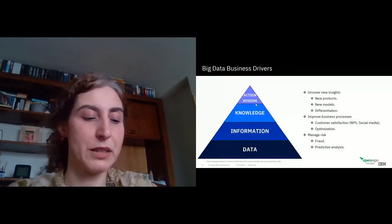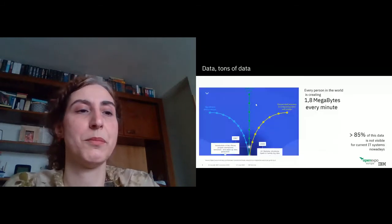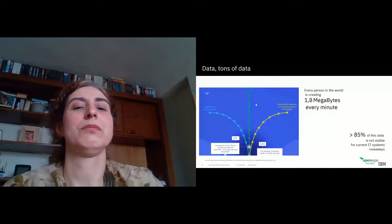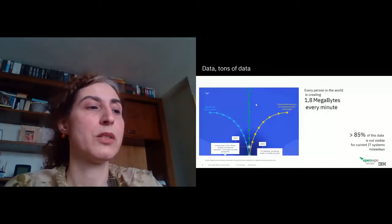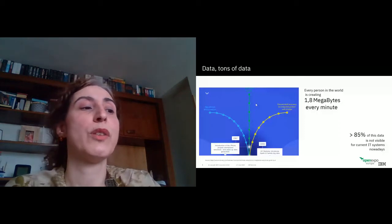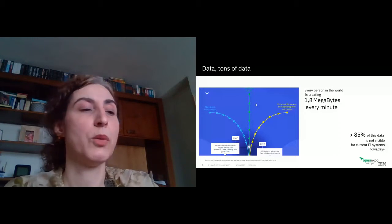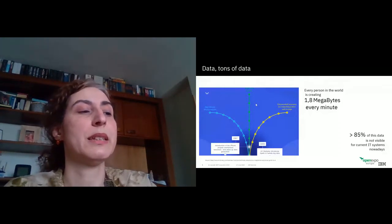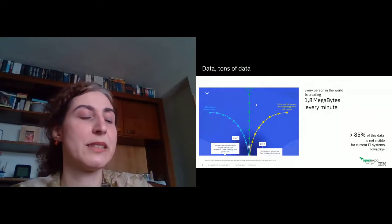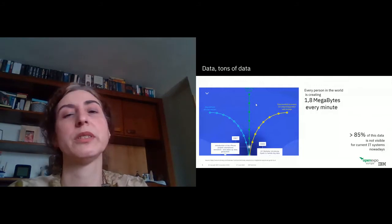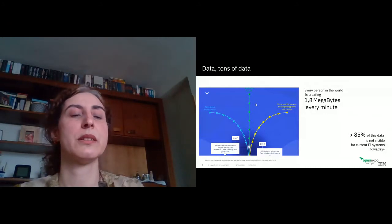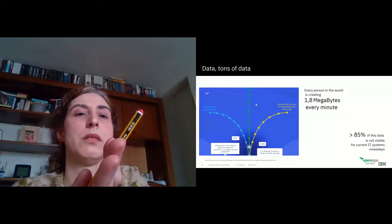So far we've talked about data, but this session is about big data — we are going to talk about tons of data. To be honest, even now there is no formal definition for big data. We can use the Wikipedia definition, where big data is defined as: a term for data sets so large or complex that traditional data processing applications are inadequate or unable to analyze them. So in big data there are two key points: data on one side, but also analytics on top of this data.